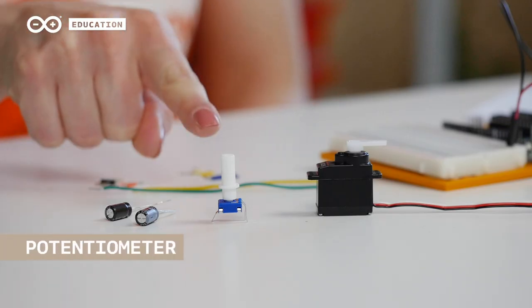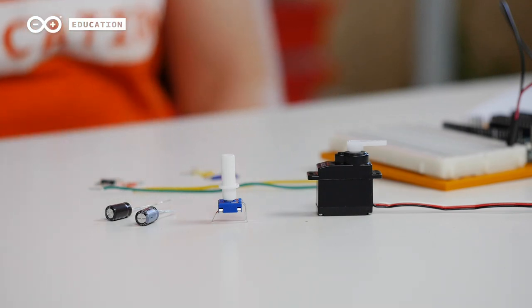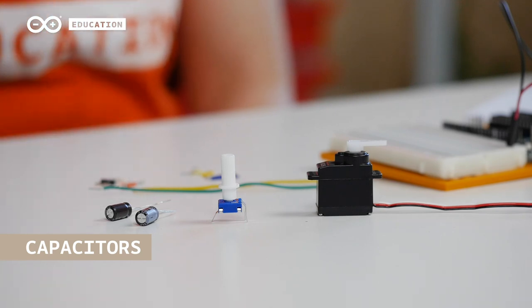Together with the servo, we will use a potentiometer to tell the board how to direct the servo. The potentiometer is a variable resistor, and we use a shaft to modify its resistance. Lastly, we will use capacitors to make sure we don't get any peak voltage changes when using the servo. You can read more about the capacitors on page 65.